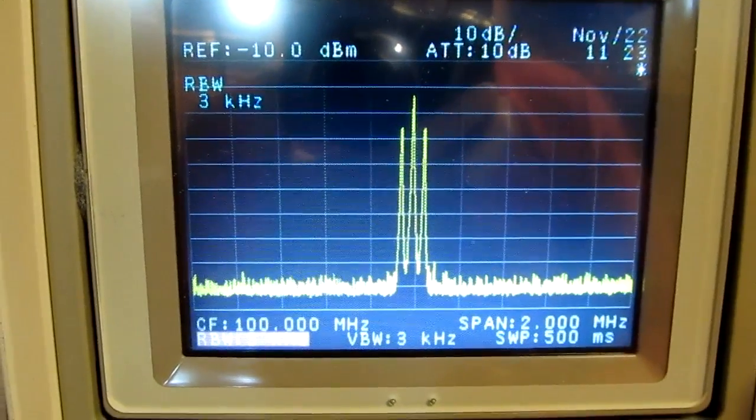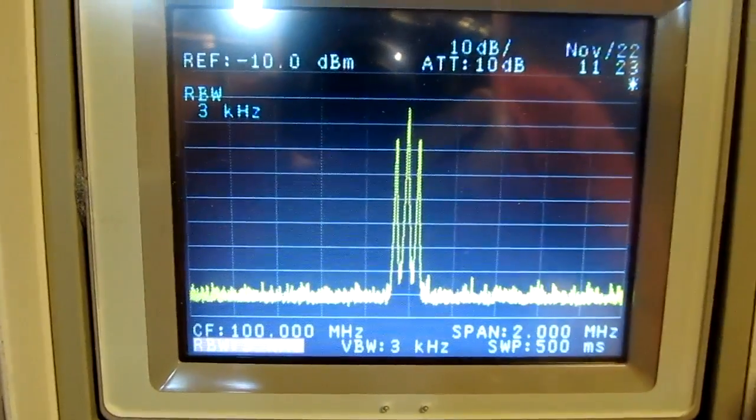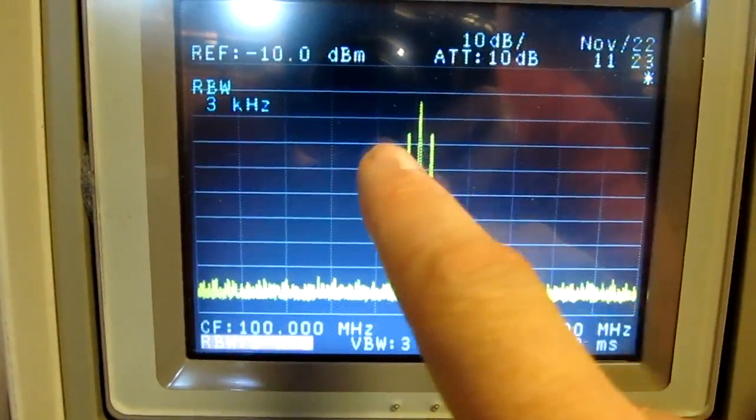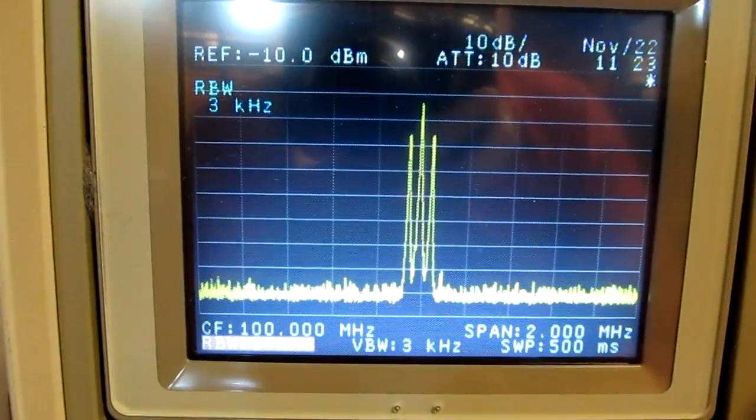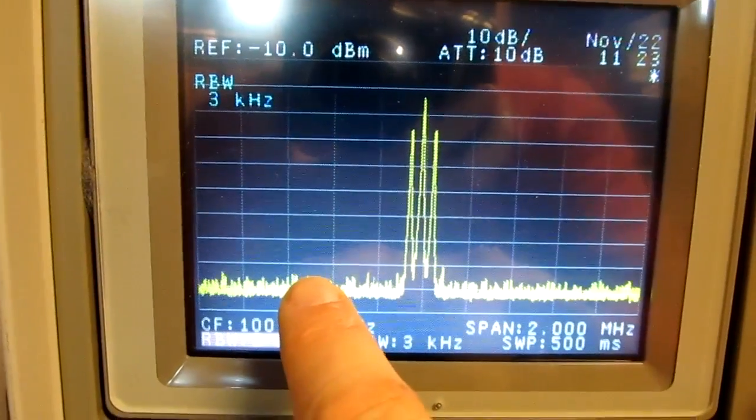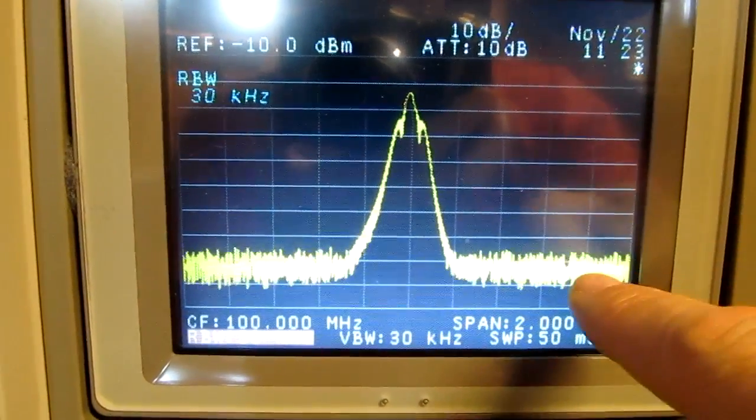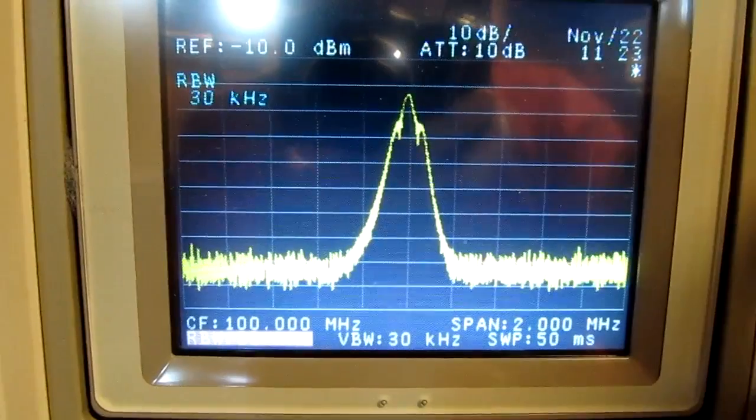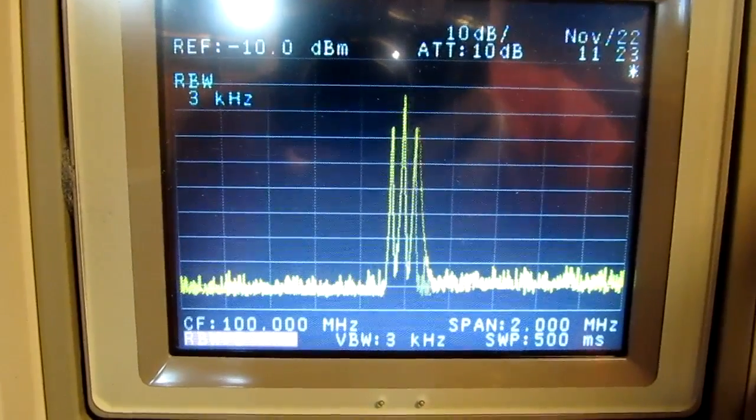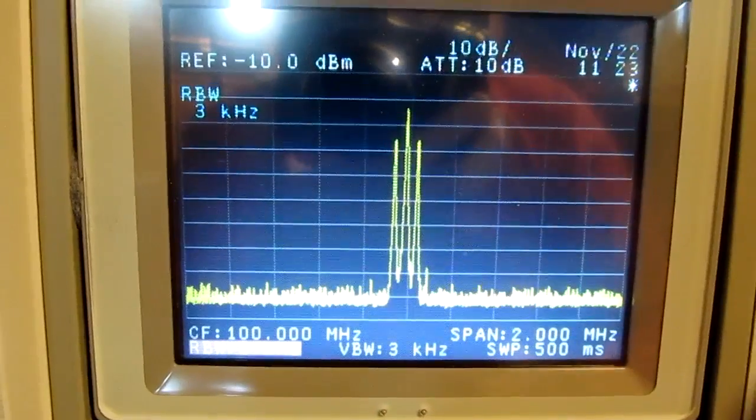This happens to be an amplitude modulated RF signal. And we're seeing the carrier and the two upper and lower side bands of the modulated signal. You also may have noticed that the noise floor dropped. Let me bring the resolution bandwidth back up again. Here we see how the noise floor has come up. If I go narrow in resolution bandwidth you see the noise floor drops with the narrow resolution bandwidth.